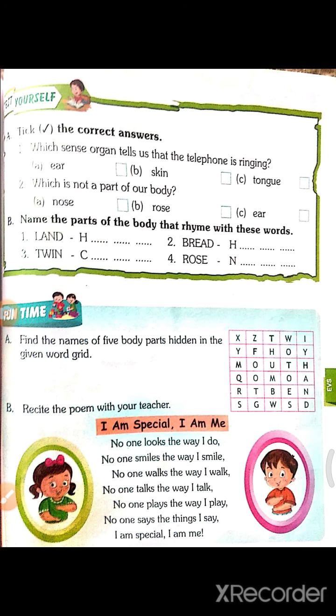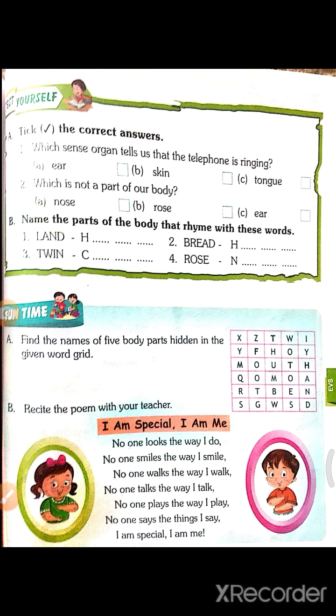It is very simple. The hidden body parts are: foot, mouth, toes, and thumb.